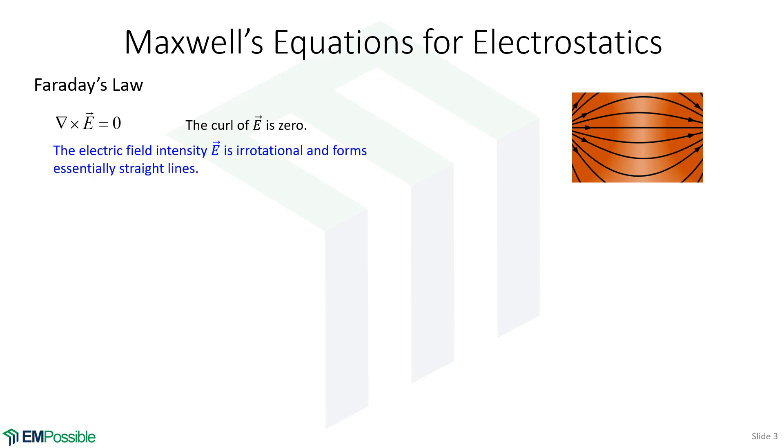And what it's saying is the curl of the electric field intensity E has to be zero. So if the electric field has no curl, that means the electric field cannot form loops. It is irrotational and has to essentially form straight lines.